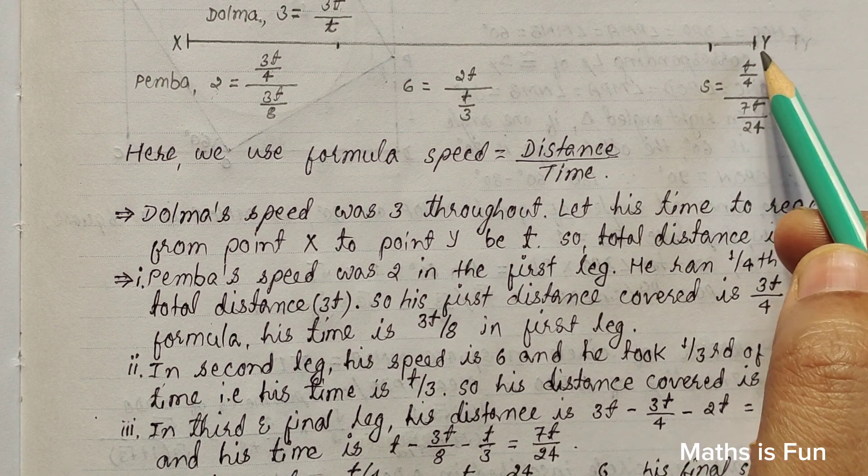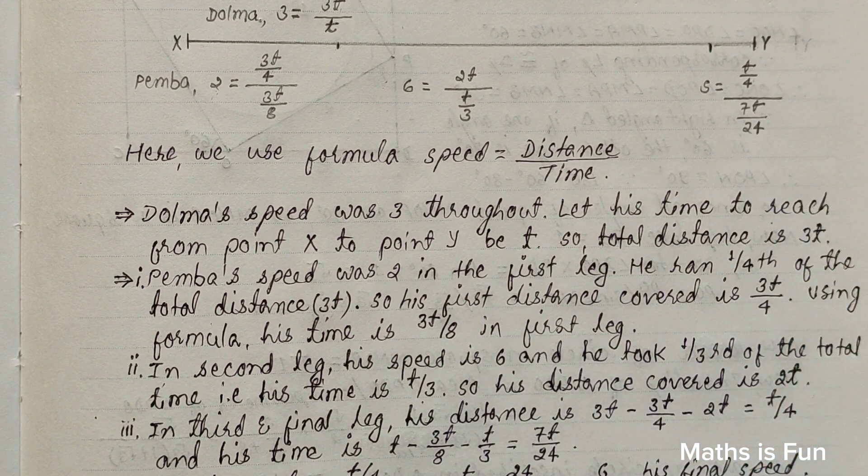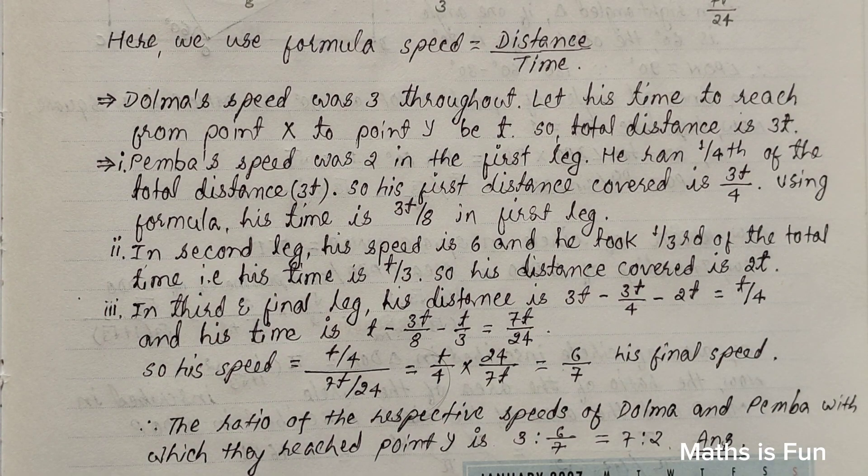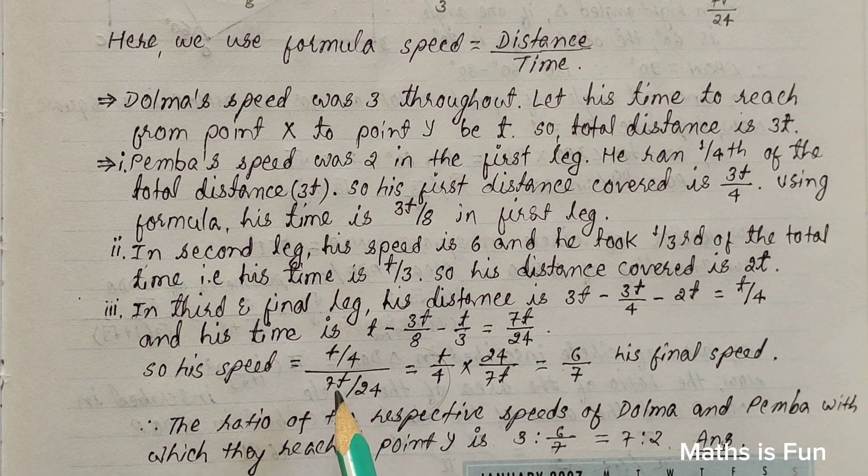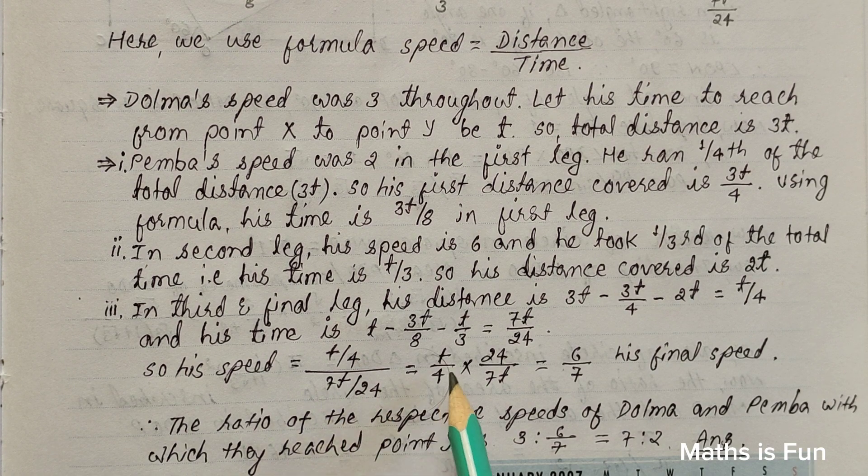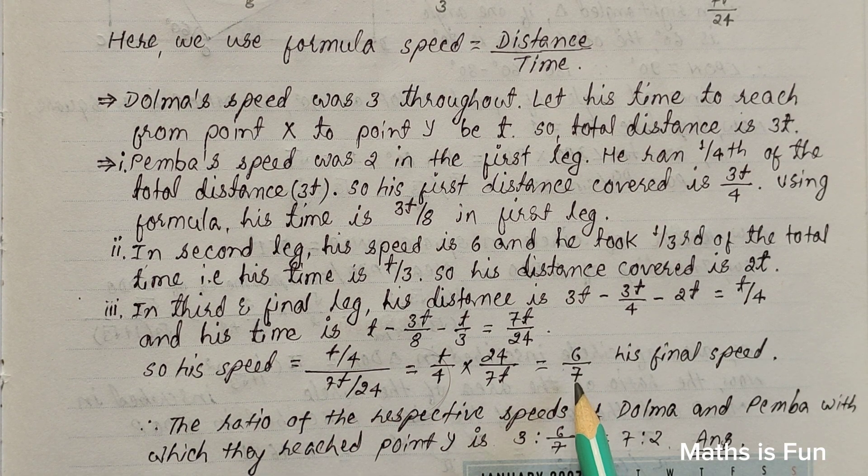So we have got his distance, we have got his time, so we can easily calculate his speed. So Pemba's third leg speed is T over 4 divided by 7T over 24, which comes out to be 6 over 7.